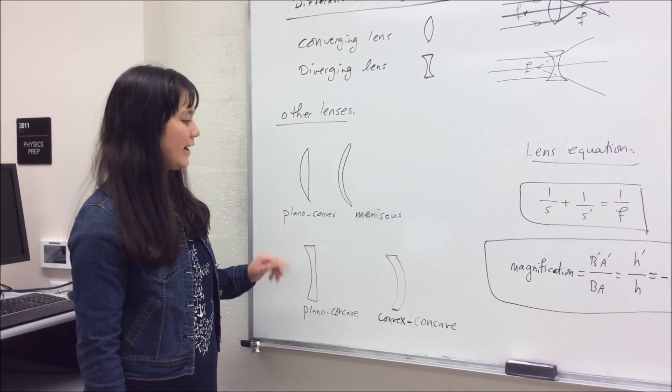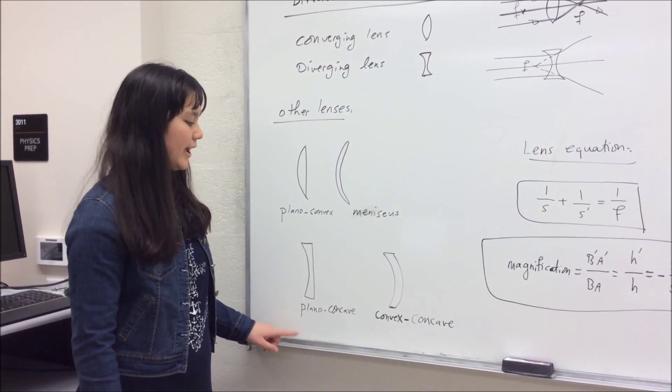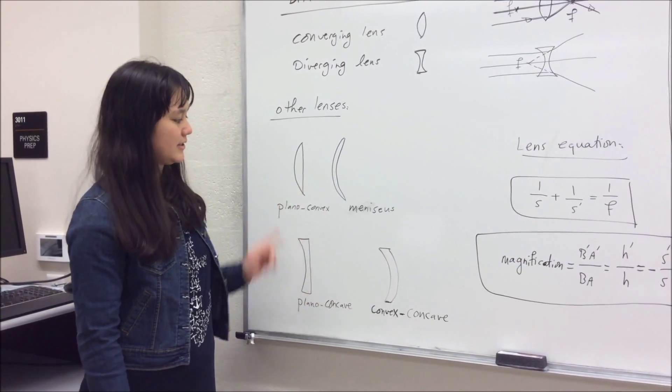Now we also have other different types of lenses, and they are plano-convex, meniscus, plano-concave, and convex-concave, as you can see in these pictures.